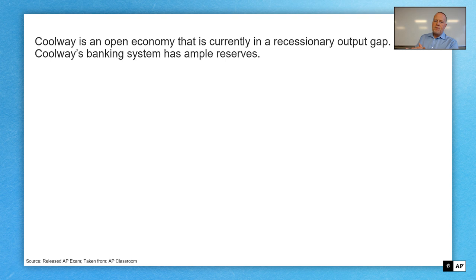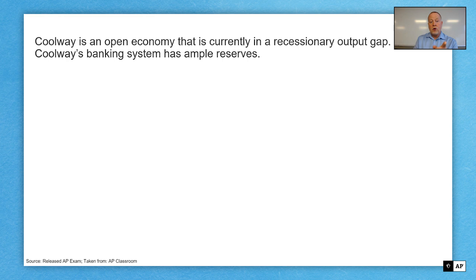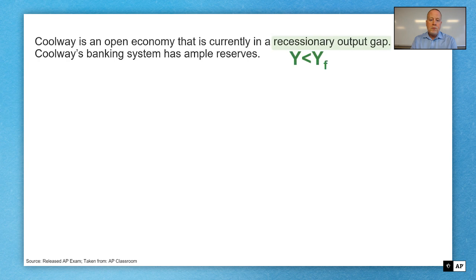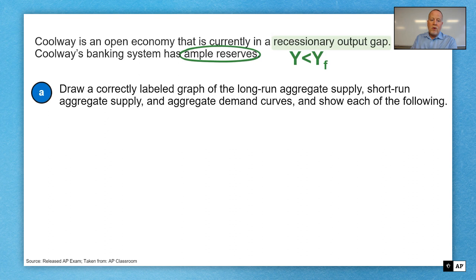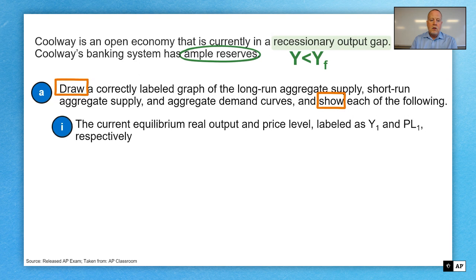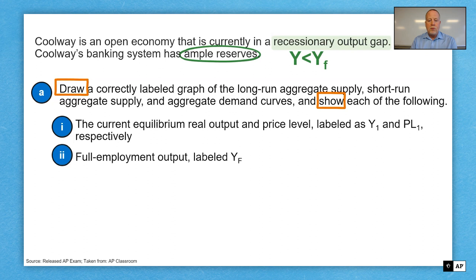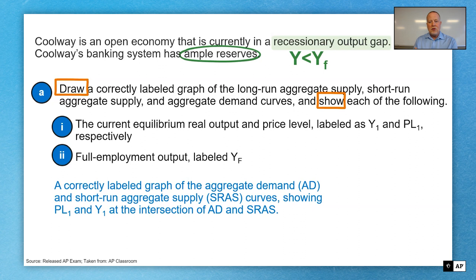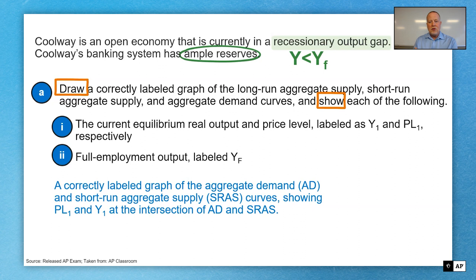On to FRQ 2. Coolway is an open economy that's currently in a recessionary output gap. Coolway's banking system has ample reserves. Recessionary output gap means output is below full employment. Ample reserves tells us that we're way out there on the reserve market graph and that open market operations are no longer effective. Draw a correctly labeled graph of the long-run aggregate supply, short-run aggregate supply, and aggregate demand curves, and show the current equilibrium real output and price level — Y1 and PL1 respectively — and full employment, YF. This is a pretty standard setup going back to unit three, making sure you know how to represent a recessionary output gap.